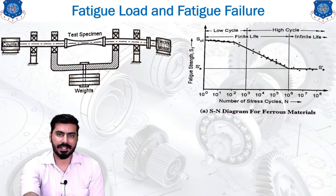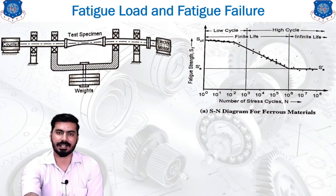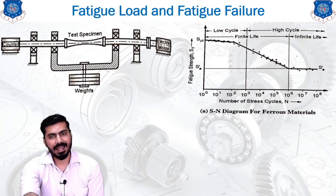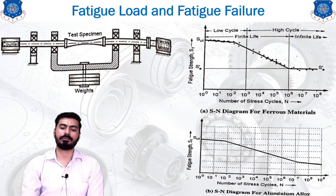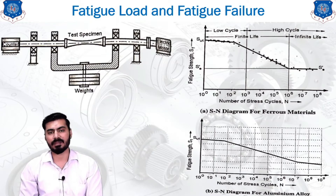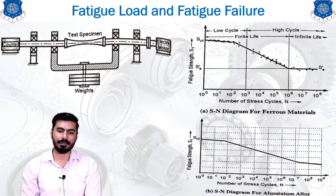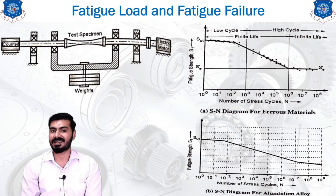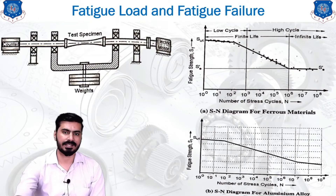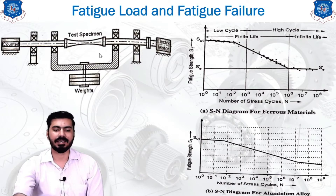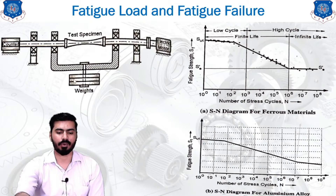For different materials we have a different S-N diagram. As you can see on your screen, one diagram is for ferrous material and another is for aluminum alloys. For different test specimen materials you can get the S-N diagram accordingly. We have considered a test specimen having the standard shape as shown in the diagram.